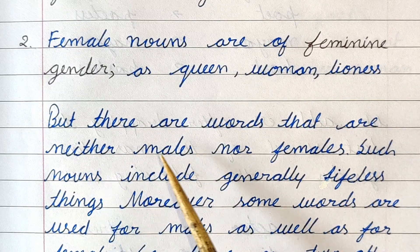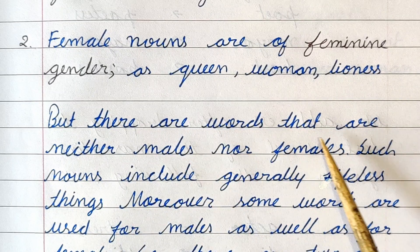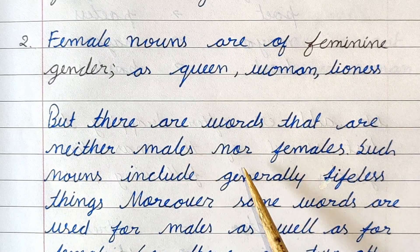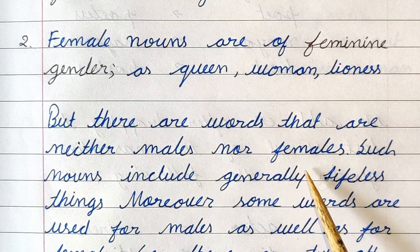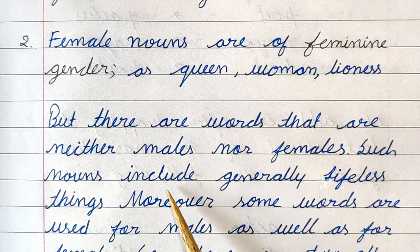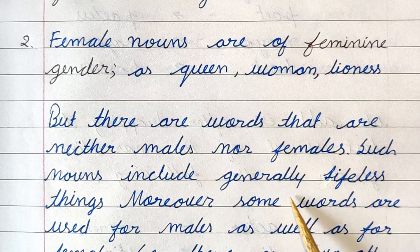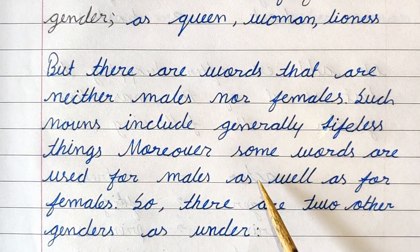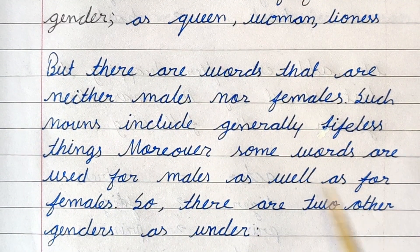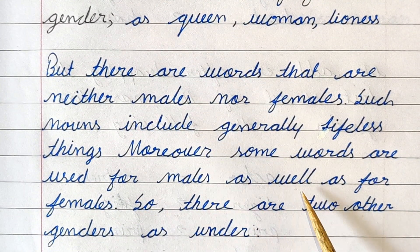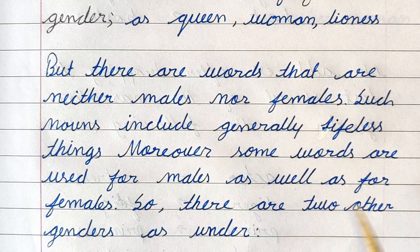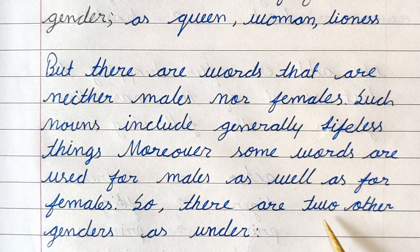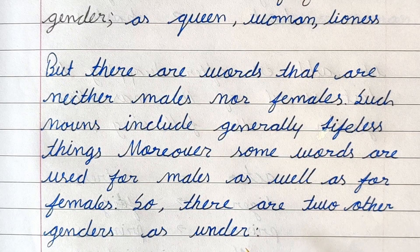But there are words that are neither male nor female. Such nouns generally include lifeless things. Moreover, some words are used for both males and females. So there are two other genders.